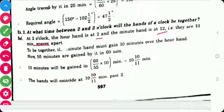Between means there is a 10 minute space between hour hand and minute hand. So, to be together the minute hand must gain 10 minutes over the hour hand. Now 55 minutes are gained in 60 minutes. Then 10 minutes will be gained in 60 into 10 divided by 55. So, it is 10 and 10 by 11 minute.